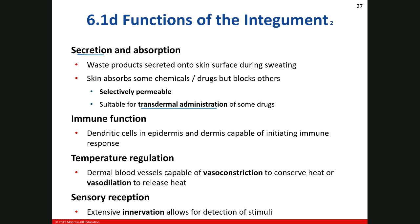For immune function in the skin, remember the Langerhans cells or dendritic cells that hang out in the epidermis — in the stratum spinosum. A lot of the time they're going to intercept abnormal cell formation due to ultraviolet radiation or mutation of keratinocytes, and those cells will initiate an immune response.